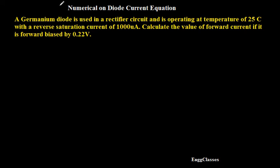A germanium diode is used in a rectifier circuit and is operating at a temperature of 25 degrees Celsius with a reverse saturation current of 1000 microamperes. Calculate the value of forward current if it is forward biased by 0.22 volt. So how do we calculate the diode current? For this we have the expression.